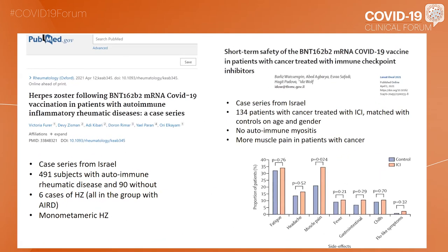In another case series from Israel, 144 patients with cancer treated with immune checkpoint inhibitors were matched with controls on age and gender. No autoimmune myositis was noted in the vaccinated patients, and there was more muscle pain in patients with cancer — that was the only difference in the safety profile.